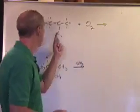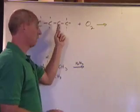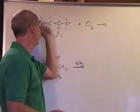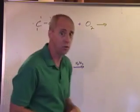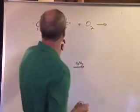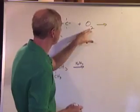What's the name of it? Longest continuous chain including the double bond: one, two, three, four. So it's a butene with a methyl at the two. So it's a two-methyl butene, right? And that two-methyl butene is going to react with this.